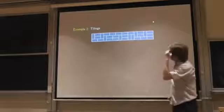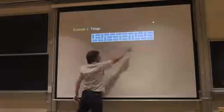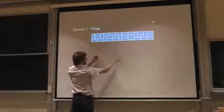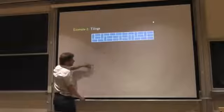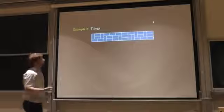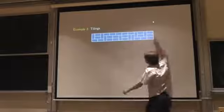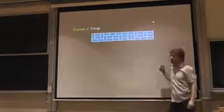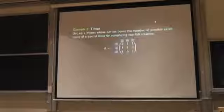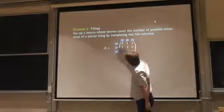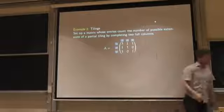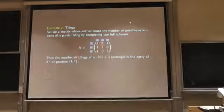You could consider a matrix labeled by rows and columns by all the possible shapes, and then you write in each matrix entry how many possibilities there are to get from this shape to this shape by completing one column. Then the number of tilings altogether would be this matrix raised to the nth power, and you look at the entry that corresponds to the straight shape in the beginning and the straight shape in the end. In this case, it's this matrix.